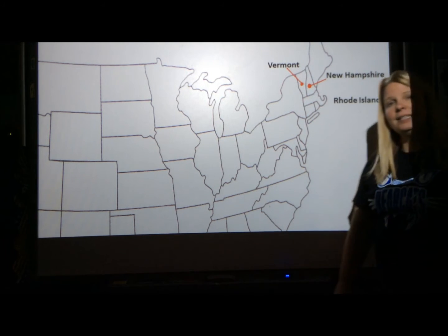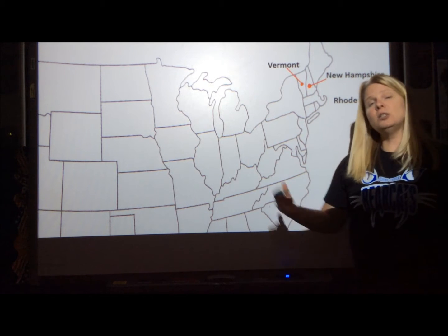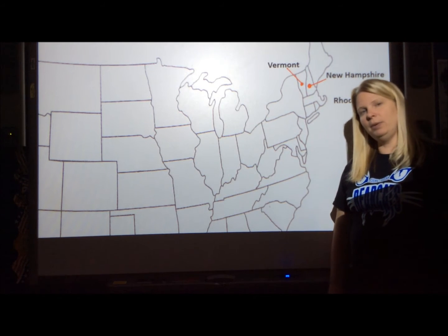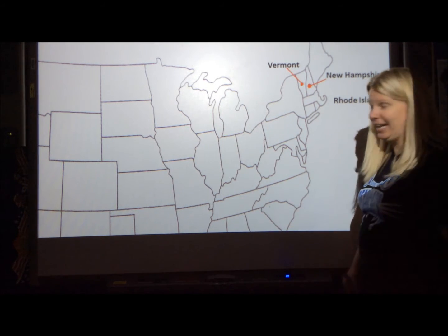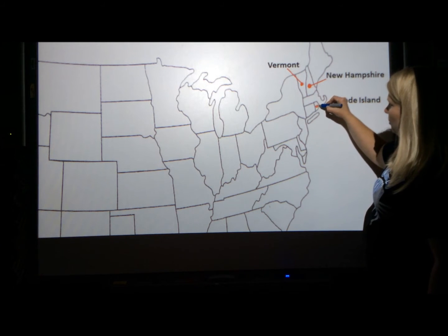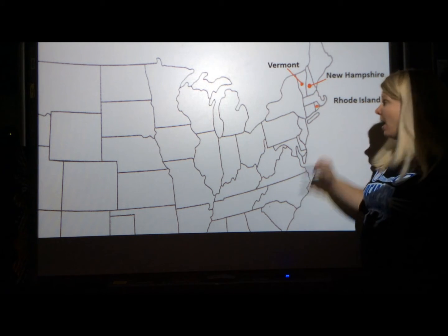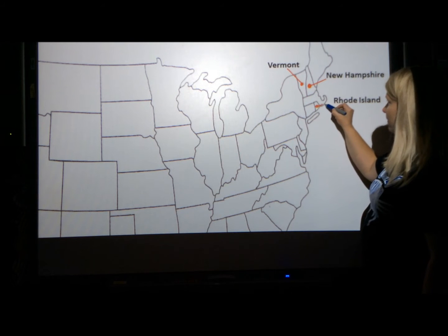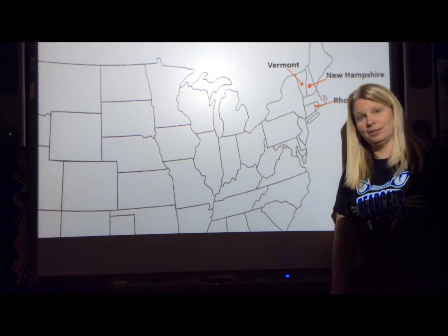The next state is Rhode Island. Rhode Island is the smallest state. Can you find it up here? That little area right there is Rhode Island, so put your dot in the middle of it and a line out to Rhode Island.